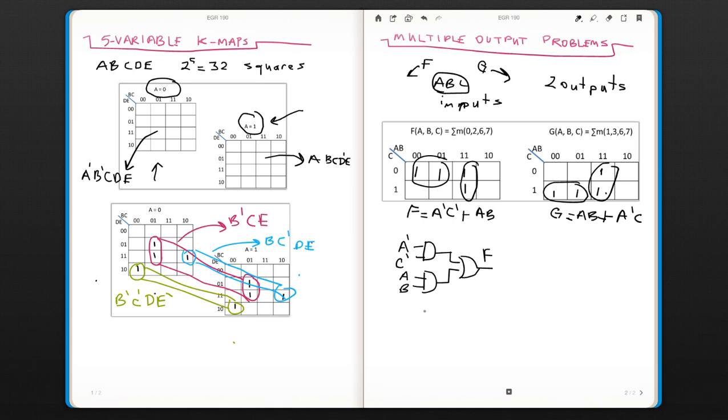And your G, again, same one, AB, A0, C. And this would go to an OR gate. So this is your G.